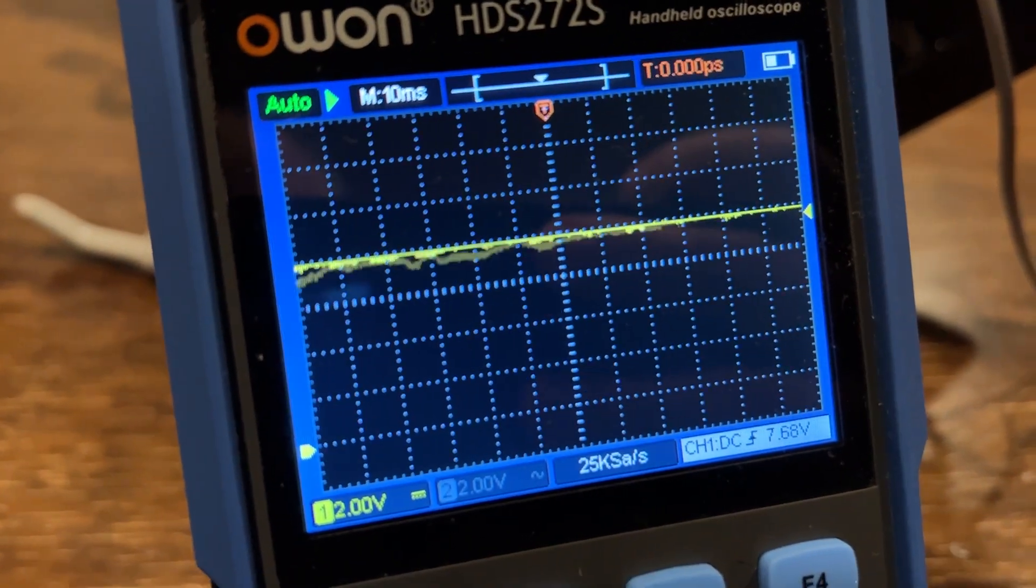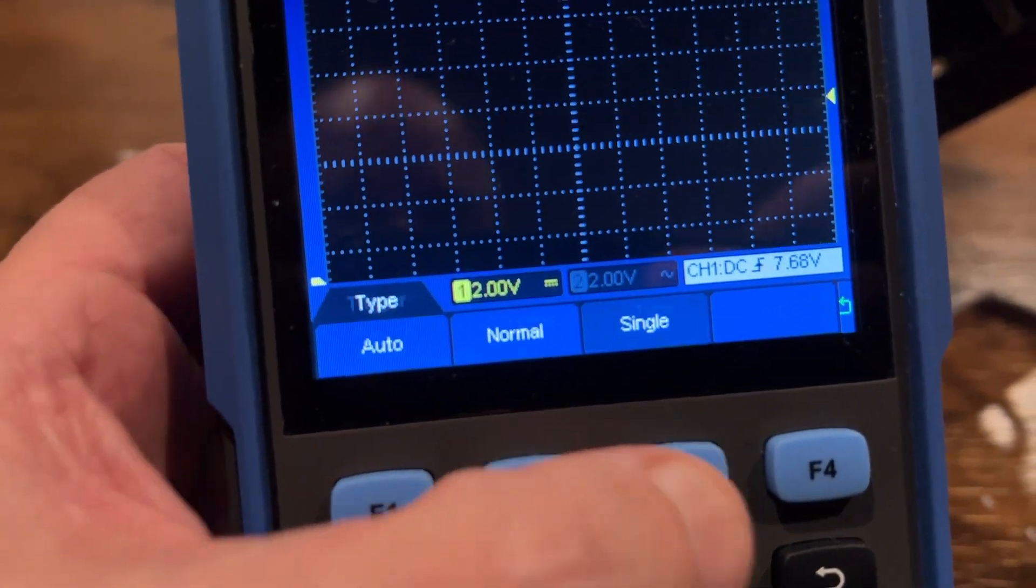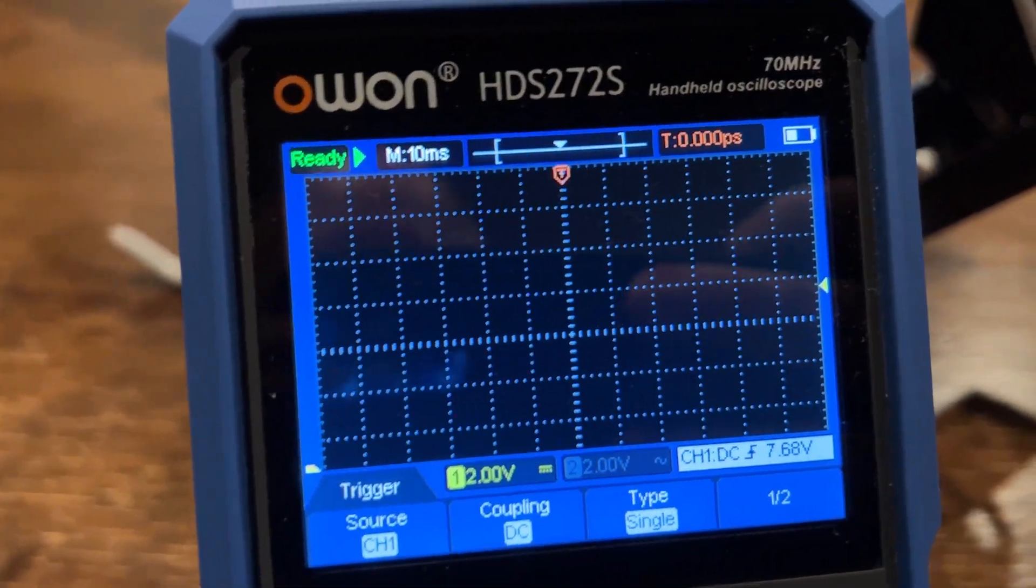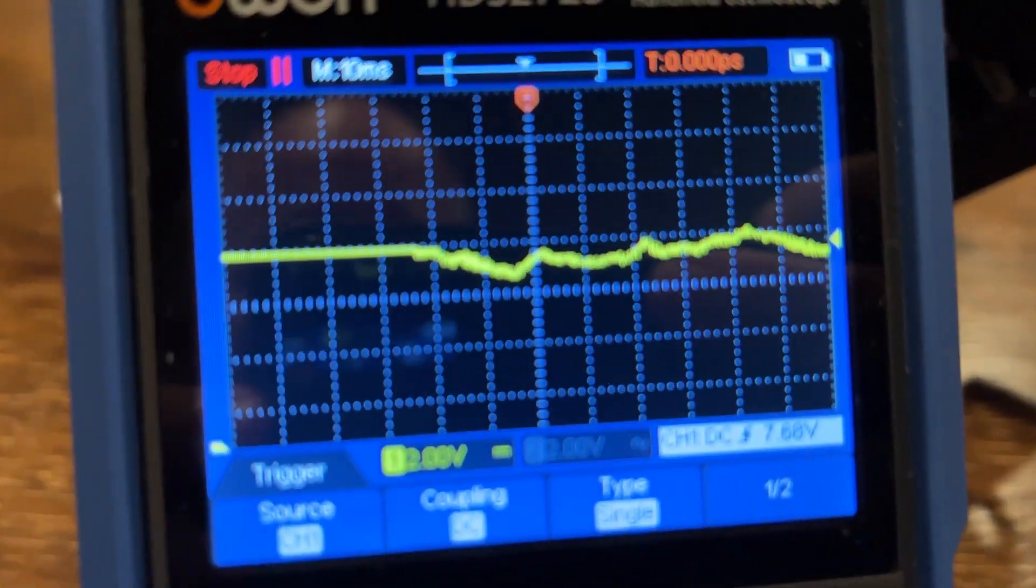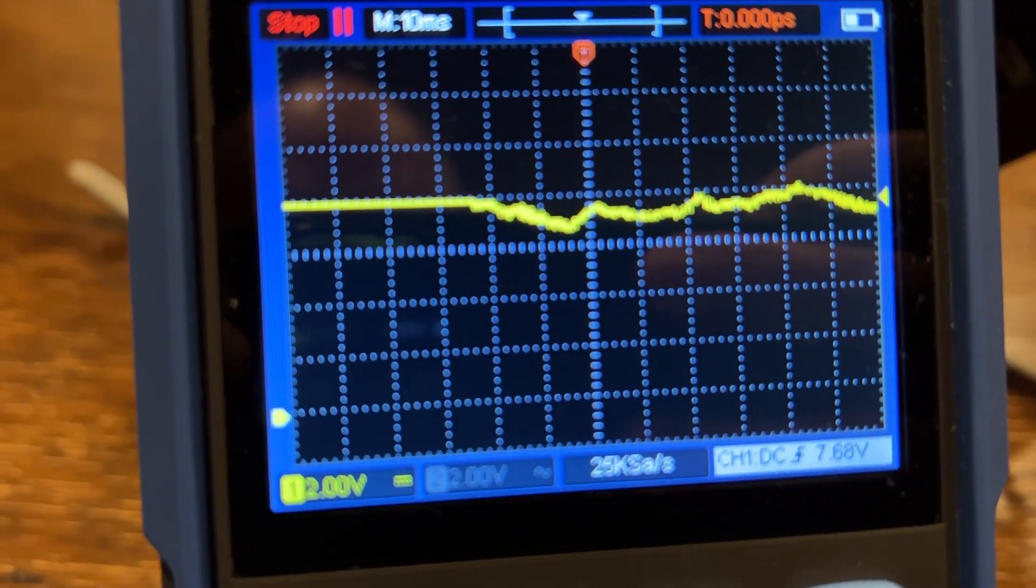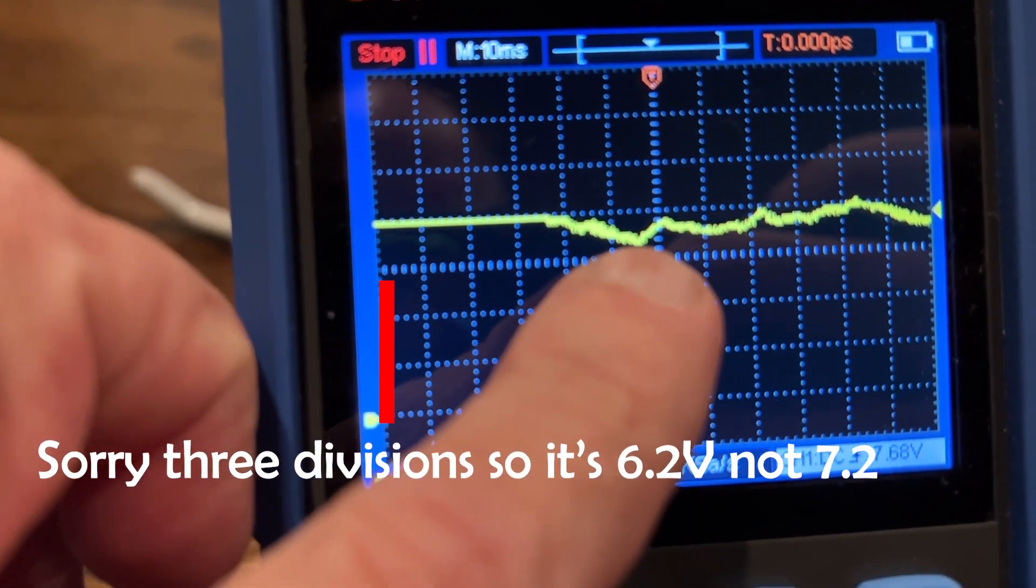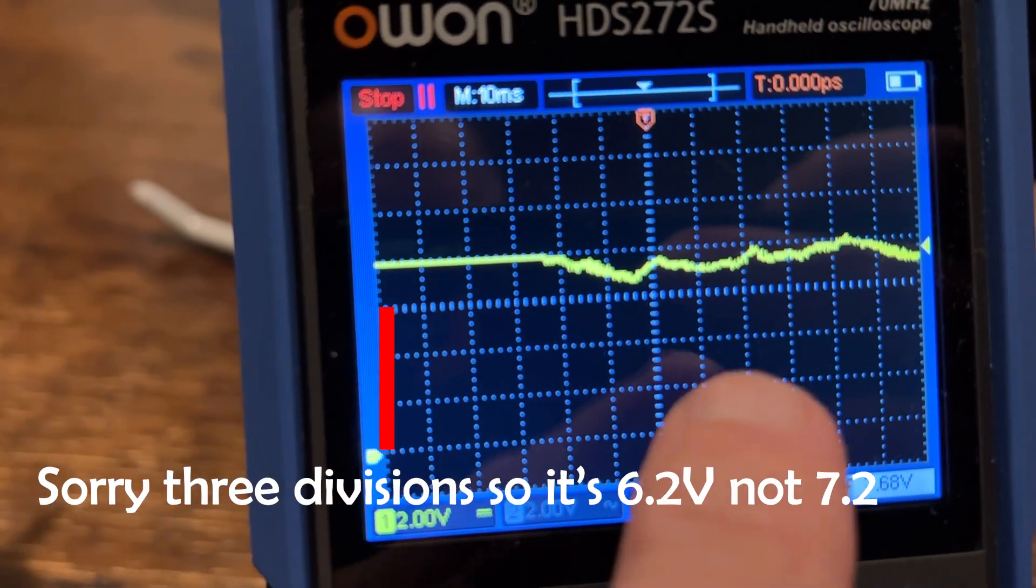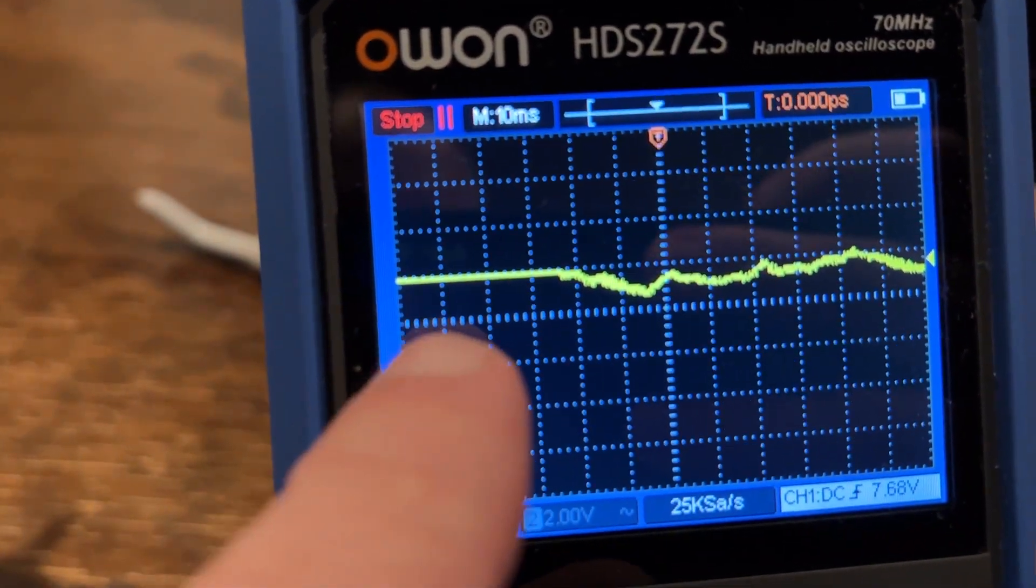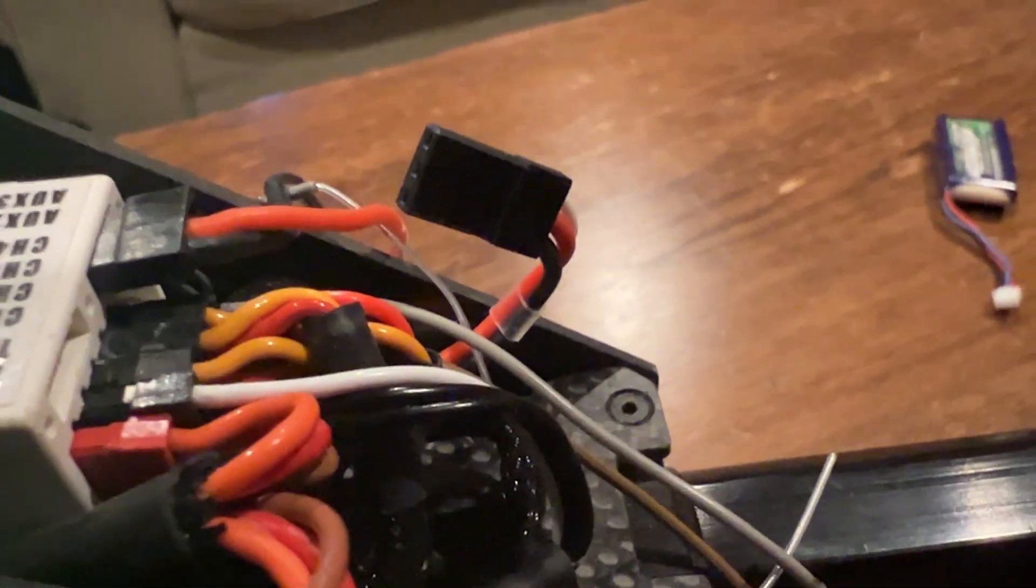Right, so in order to save it we're going to go into trigger and select the type - single. So there is nothing until it captures one of those drops. Okay, there it is. So as you can see, that would be 2, 4, 6, 7. So right here it's around 7.2 or something like that from the normal 8 volts, right? So as you can see it dropped, and this is without the X-Guard - it's not connected, it's disconnected right now.